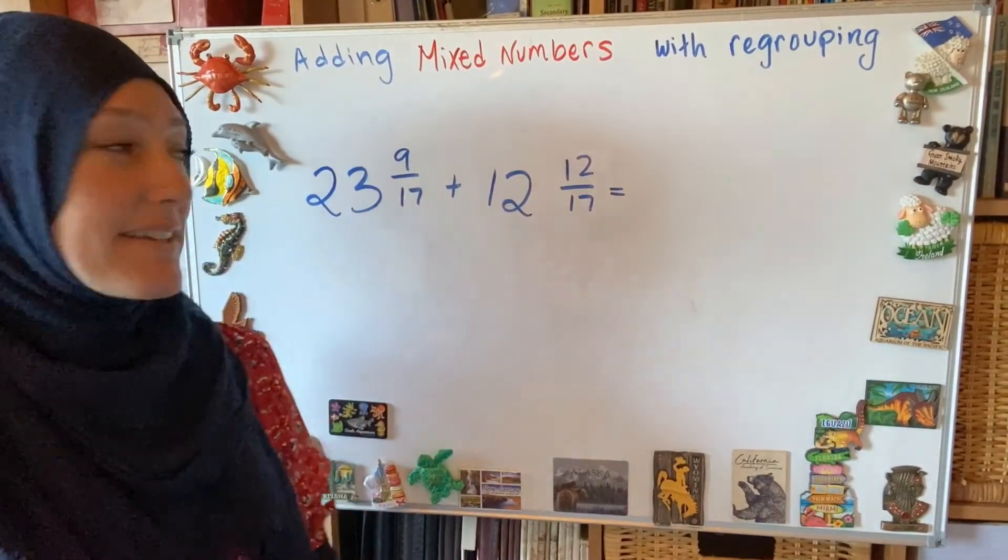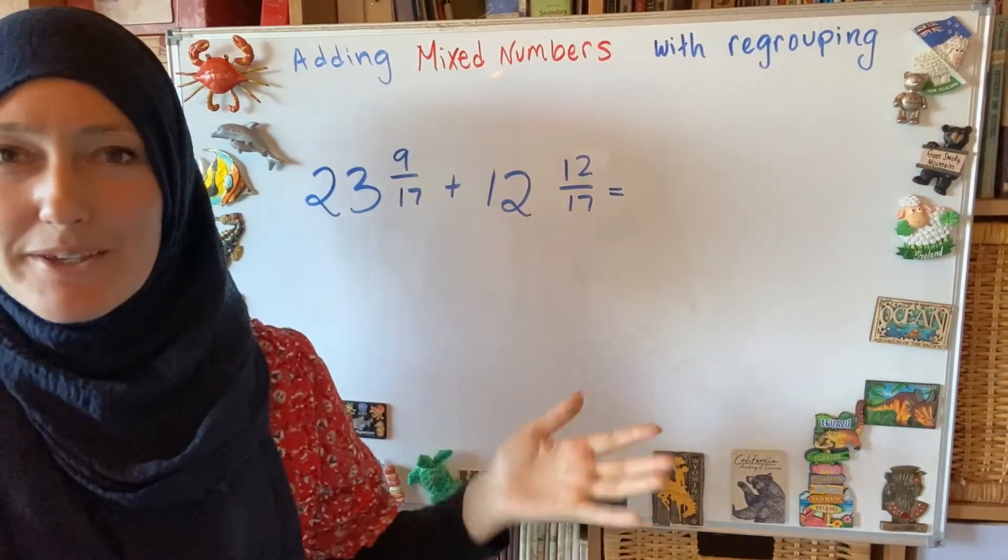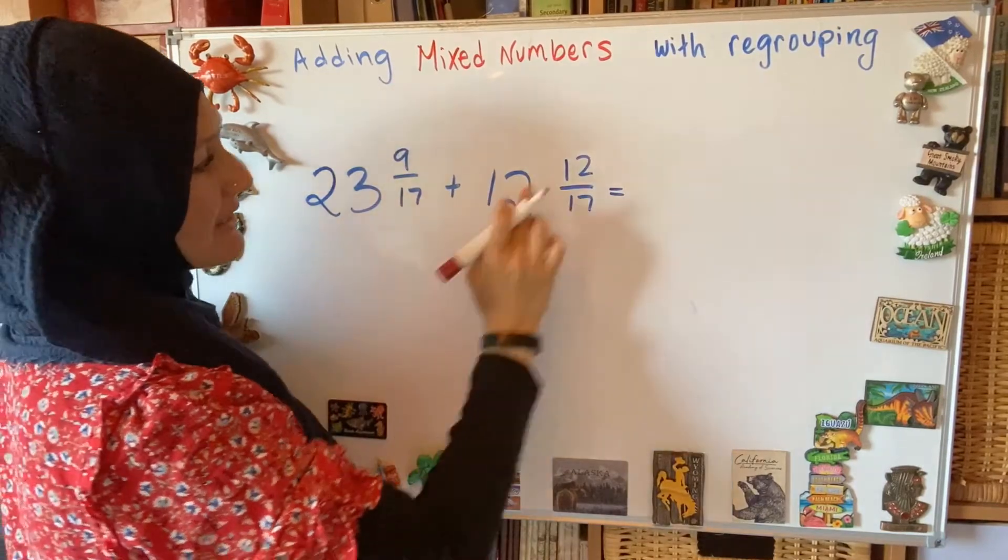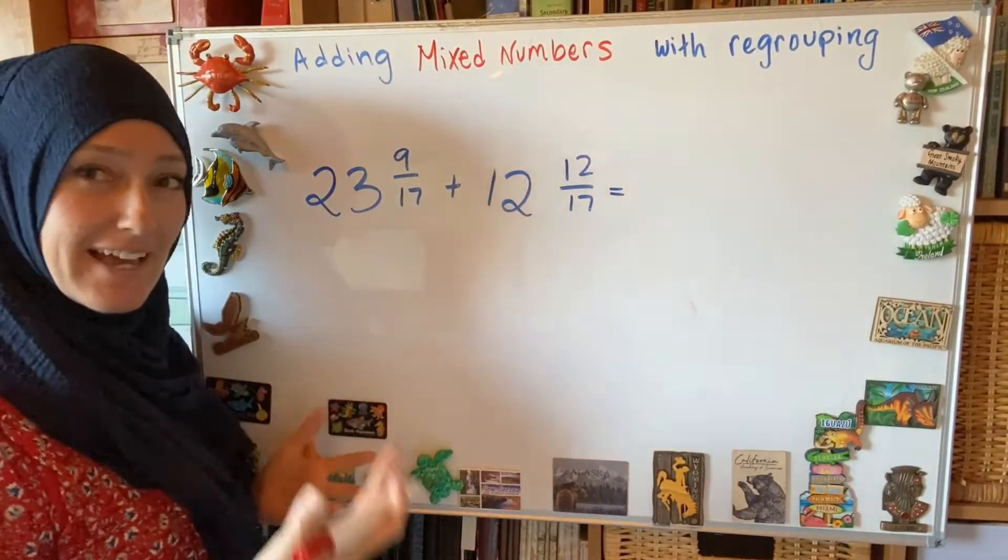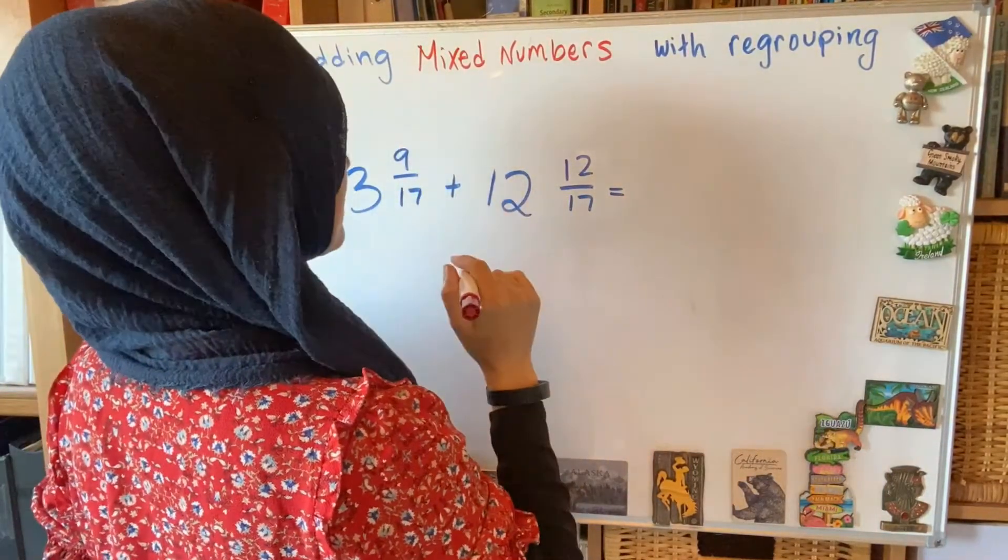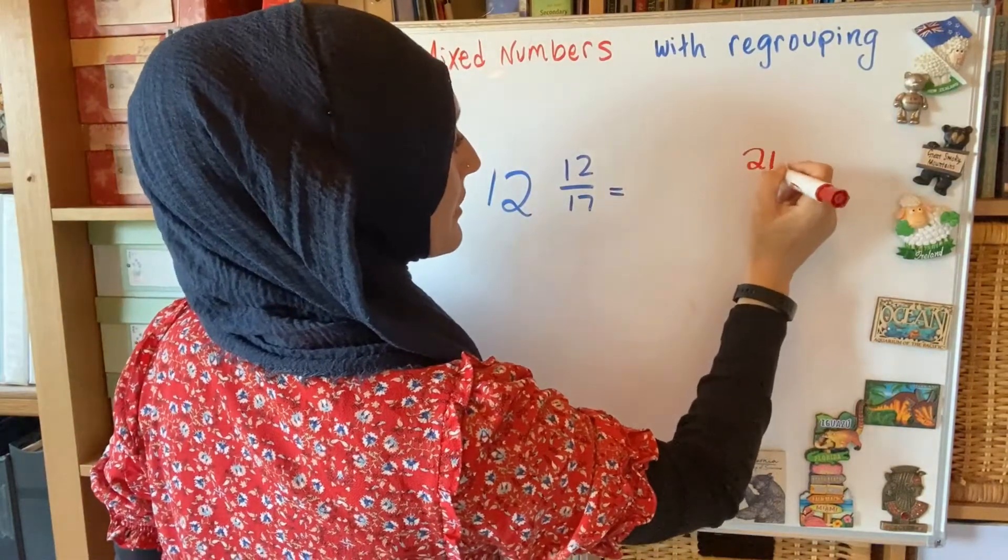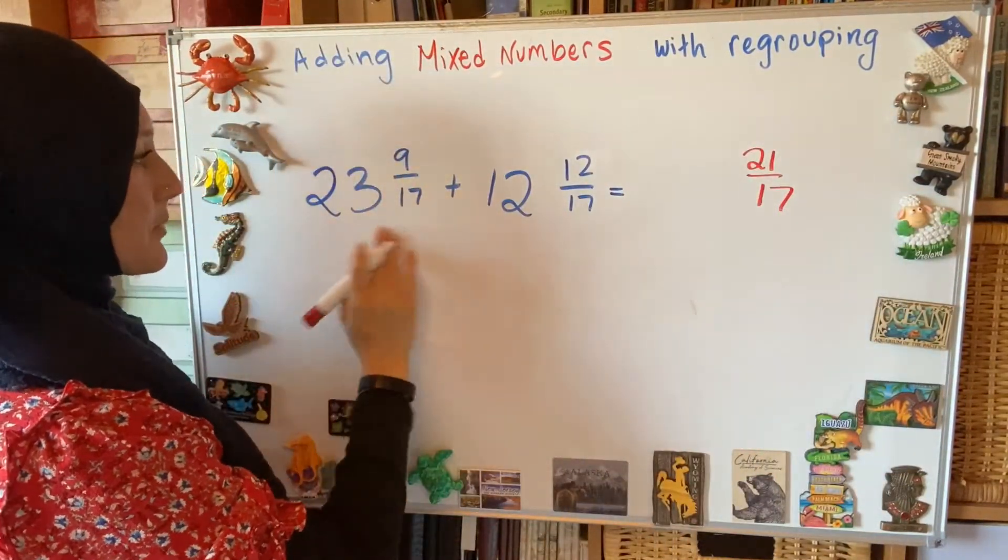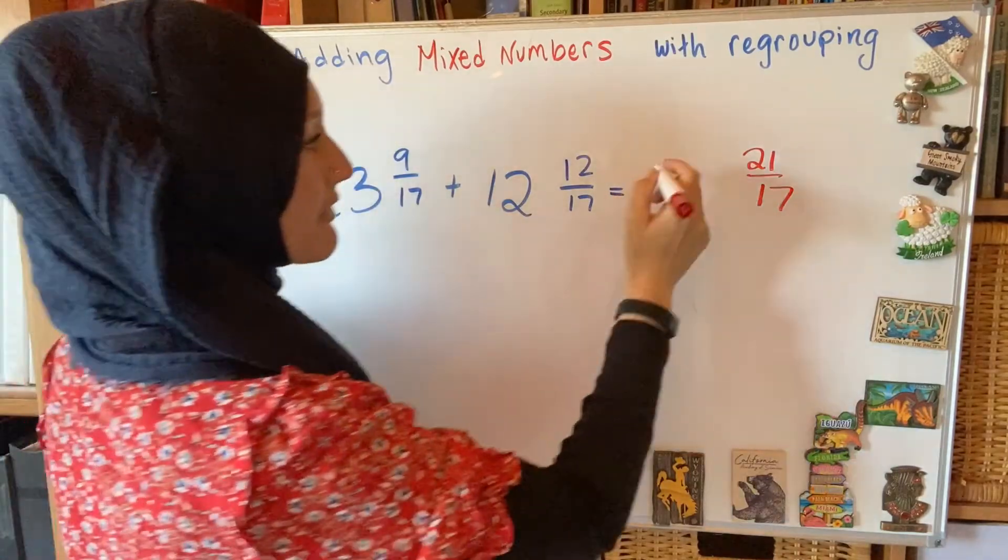Okay, this is the last one. It doesn't matter what the numbers are. They can be really big, really small. The process is always the same. I take my fraction first, so 9 seventeenths and 12 seventeenths, add those together, and I will get 21 seventeenths. And then I add my whole amounts, 23 and 12, will give me 35.